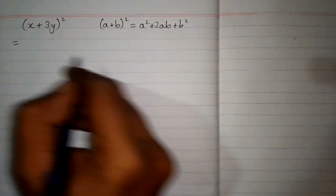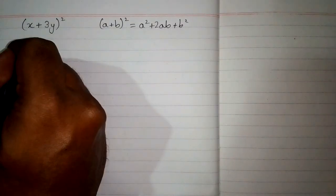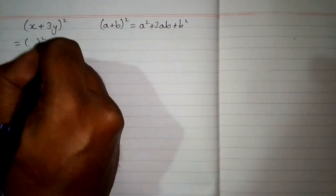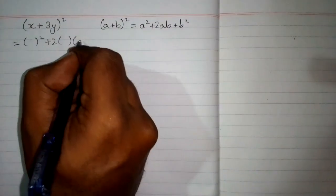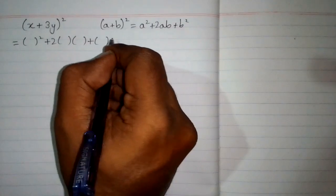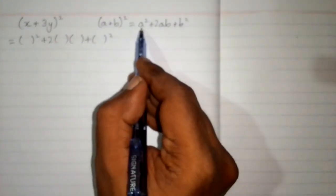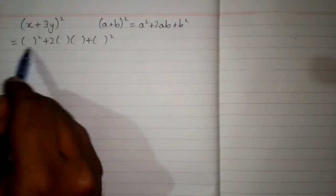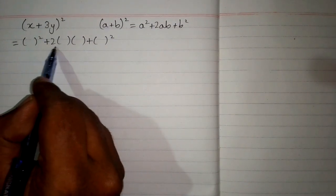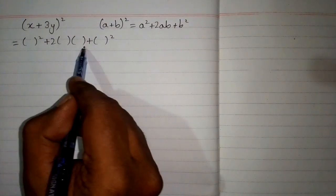So we will apply this formula. First we will write the structure of the formula which is a² + 2ab + b². We can put brackets in place of a and b, so this is a² + 2ab + b².